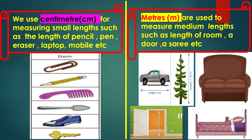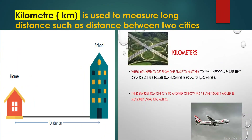We use meter for measuring medium length such as the length of a room, length of a sofa, and height of a door. Meter is a basic unit of measuring length. The biggest unit of measuring length is kilometer, whose short form is km. Kilometer is used to measure long distances such as the distance between two cities or the distance between your home and school.